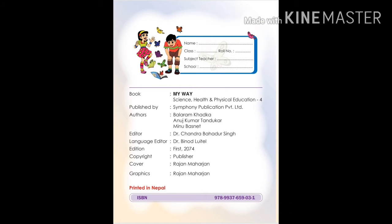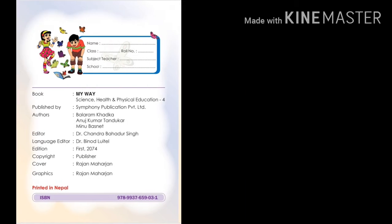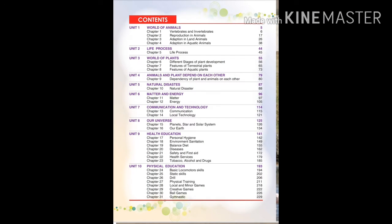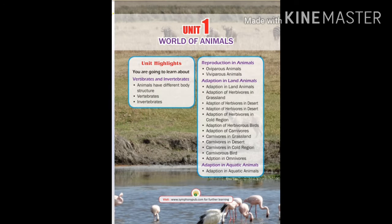If you turn your books, these are the pages. We are now on the contents page — all the topics which we will read in Grade 5 are here. Please go through it. We will be reading World of Animals, Life Process, World of Plants, and more. Now let's start our class.